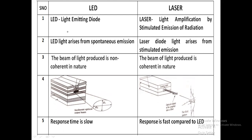LED light arises from spontaneous emission. Spontaneous means instantly by its own. For understanding this, I am showing a very simple energy level diagram — this is the higher energy level and this is the lower energy level.